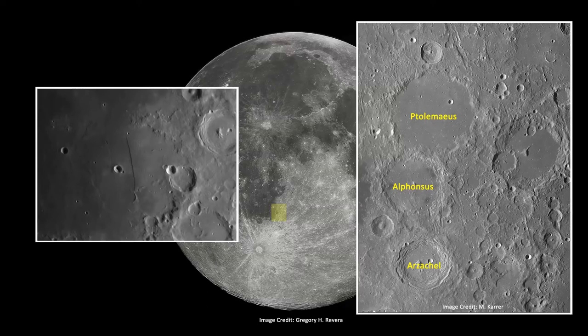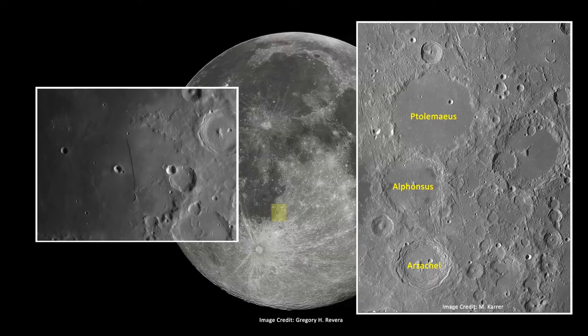This is a fault line on a straight wall, and is 110km long, 2km wide, and up to 300m deep. Day 8 of the moon's phase is a good time to look at these objects, which will be on the 9th this month.